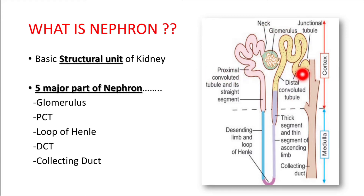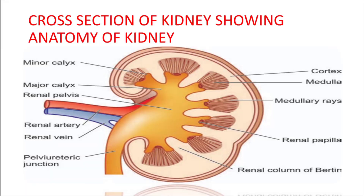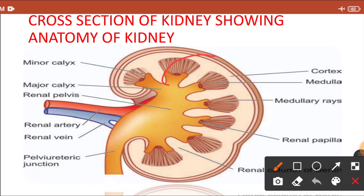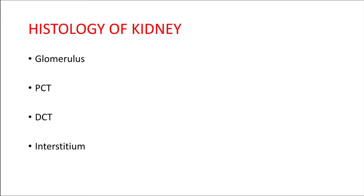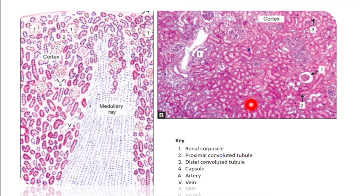The glomerulus, proximal convoluted tubule, and distal convoluted tubule are present in the cortex portion of the kidney, while the loop of Henle and the collecting duct are present in the medulla. In light microscopy you can visualize the glomerulus, tubules, and the interstitium — the portion in between the tubules. The small structures are the proximal and distal convoluted tubules, and the portion between tubules is known as the interstitium.